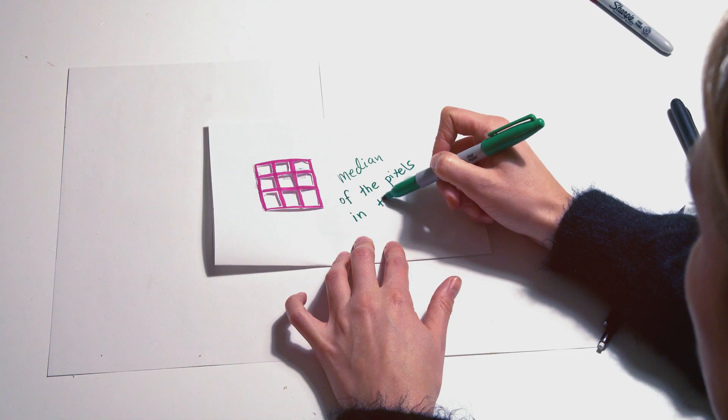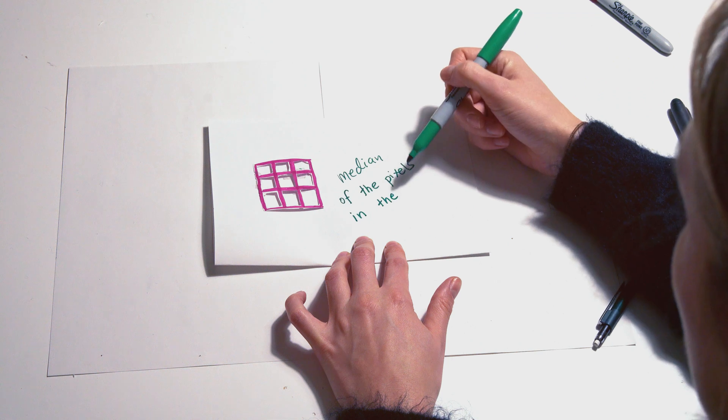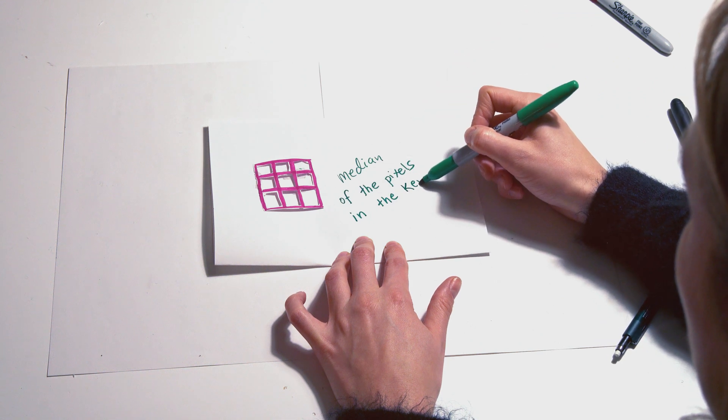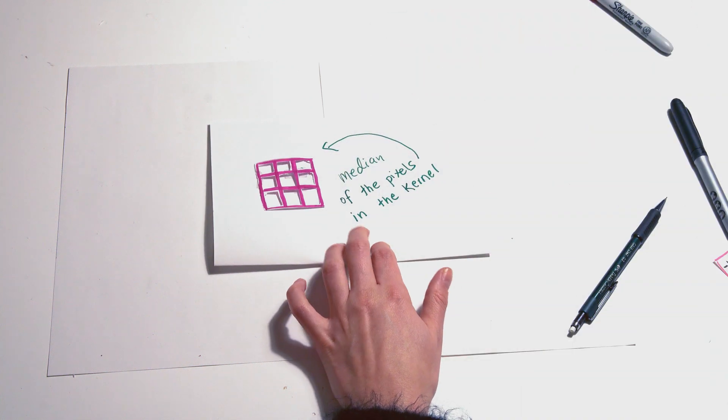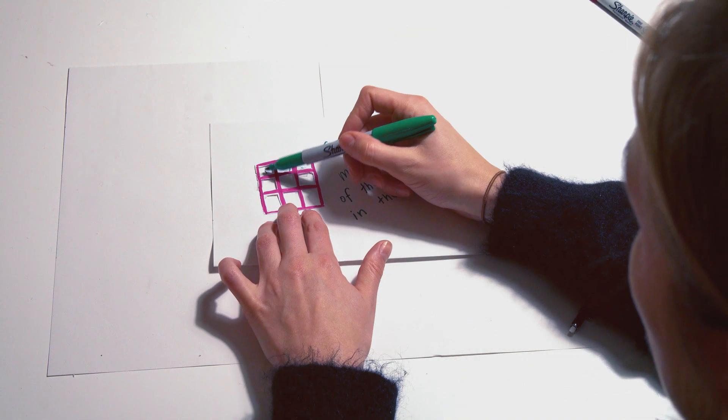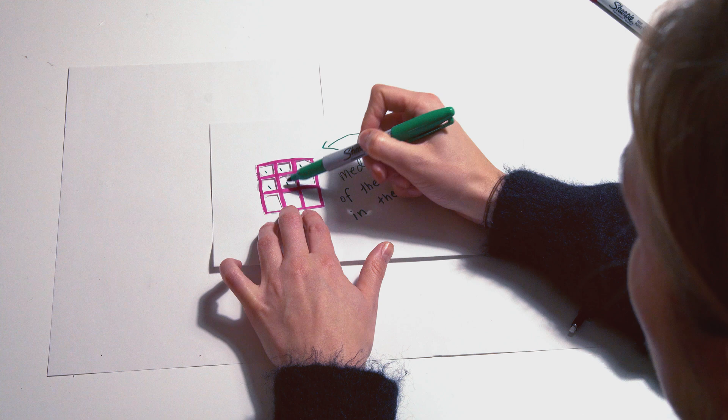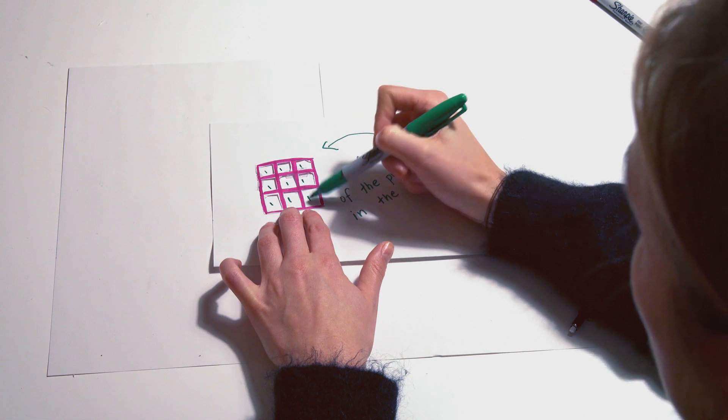Then we have another filter. It captures all the pixels around you and yourself, and then it takes the median number of the pixel values. So this is a median filter. If we would have only ones here, then the median is number one and you put a one there.